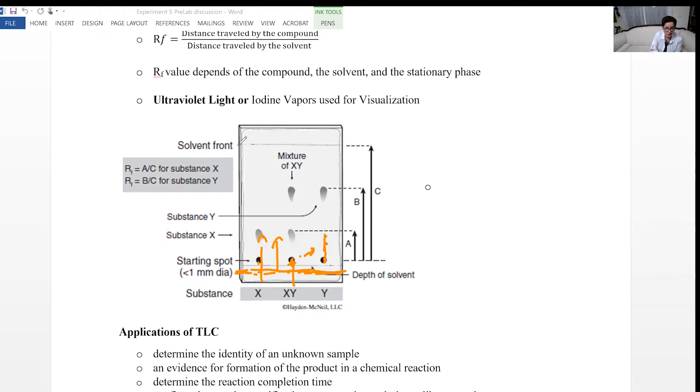When the solvent reaches to the top, about half an inch from the top, you're going to stop and draw this line. And this distance C is the distance traveled by the solvent. Now, you can also measure how much each of the samples have traveled. Like sample A traveled this much, sample B has traveled.